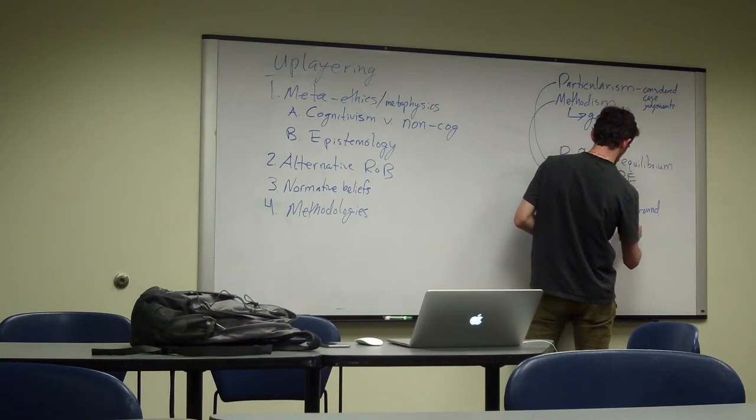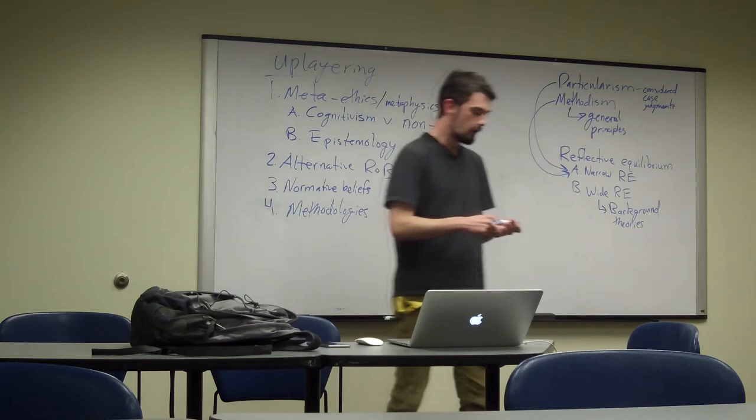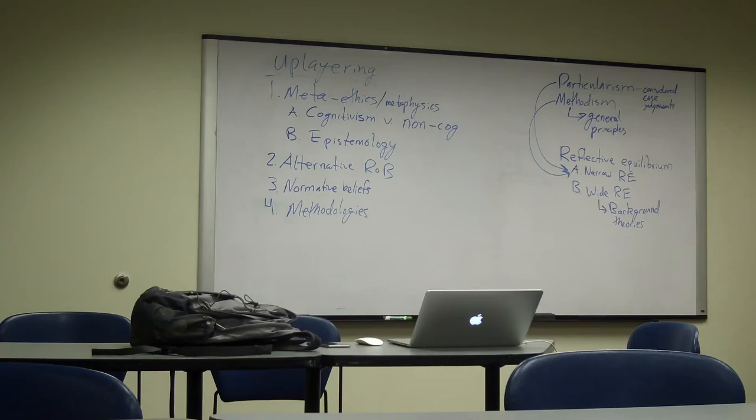Okay? Background theories. Background theories are pieces of information that seem important in moral considerations, but the solutions to them alone don't give us the solutions to a specific moral question. So, what is the nature of personal identity? Well, because I know what personal identity is, doesn't mean I know what is right and what is wrong, but it seems important when I go to consider what is right and what is wrong. What is the ontological status of a human? This is another type of background question.